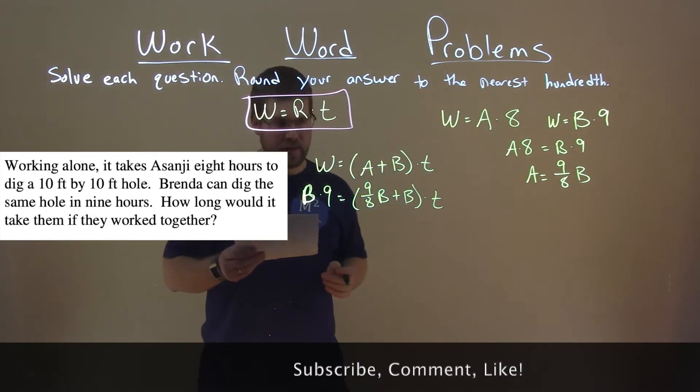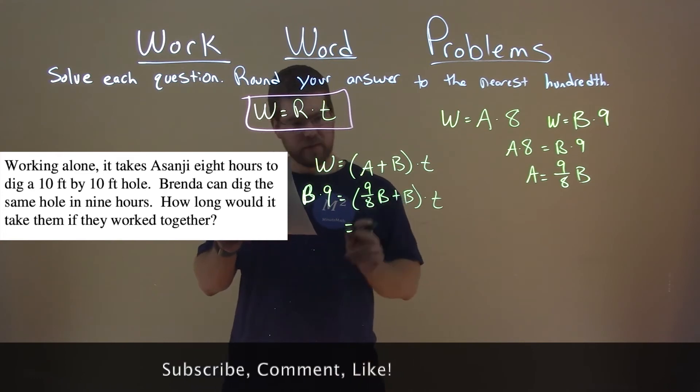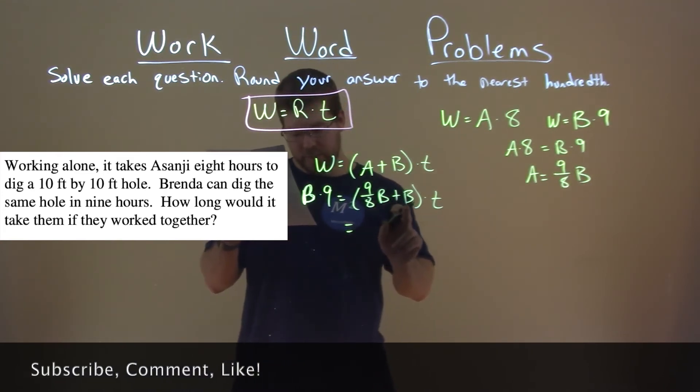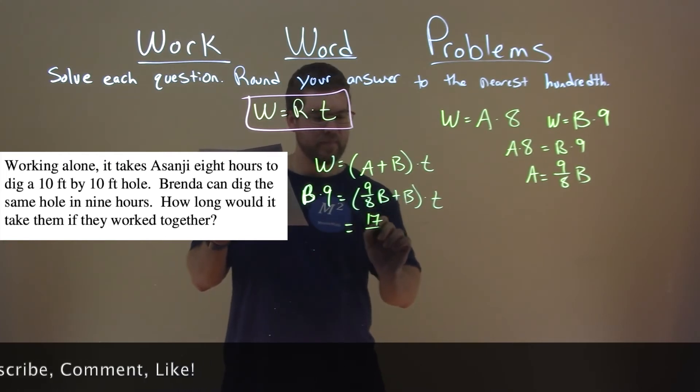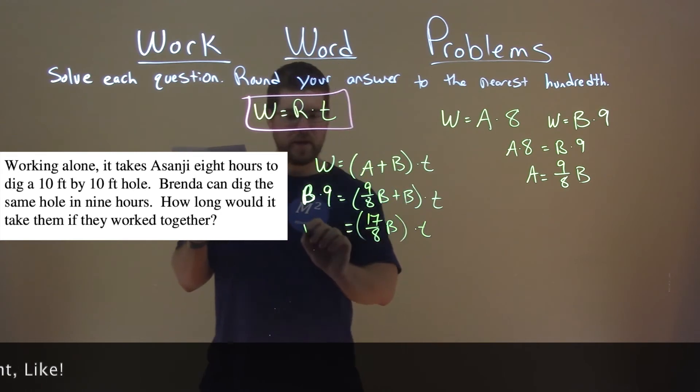Now we just have B's and T's together, let's try to get T by itself. Add what's inside the parentheses, and nine-eighths plus one B is seventeen-eighths B times T. And we have B, a better looking one, times nine.